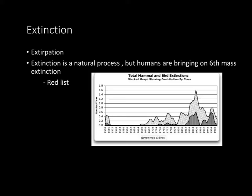Something to note about extinction is that it is a natural process. However, the problem is that we're speeding up this process much faster than it should occur. As you can see on this graph, even though it shows human impact, extinction is a very natural process — things are supposed to go extinct. But with human pollution, building, and habitat fragmentation, we're speeding up the process too quickly. We also have something known as the red list, which is a list of species that are rapidly heading towards extinction that we keep an eye on.